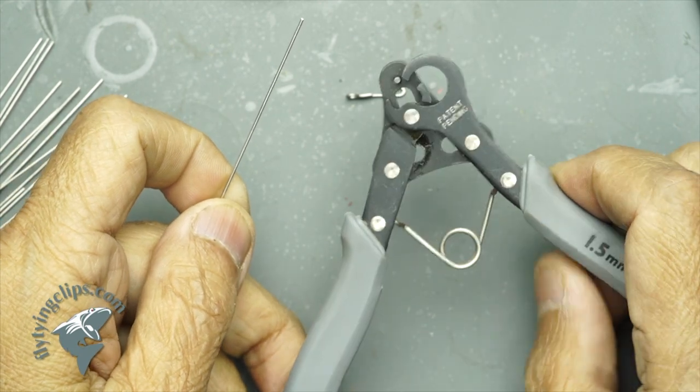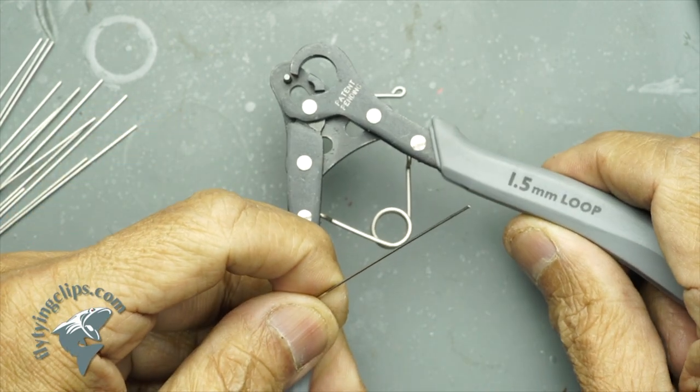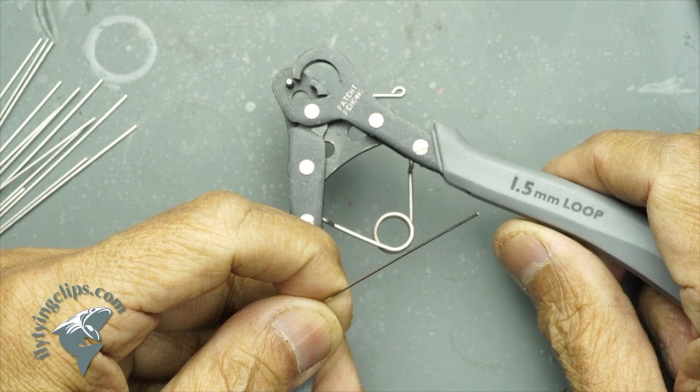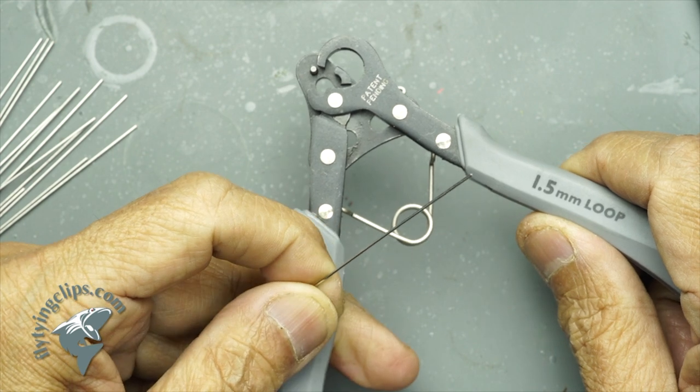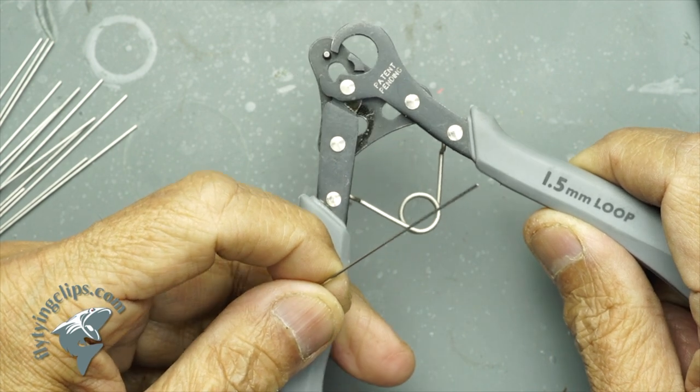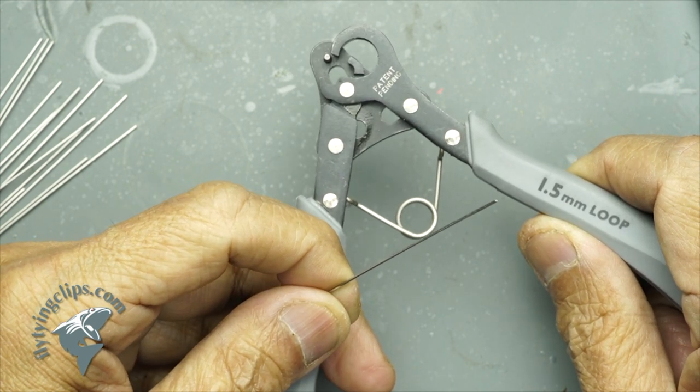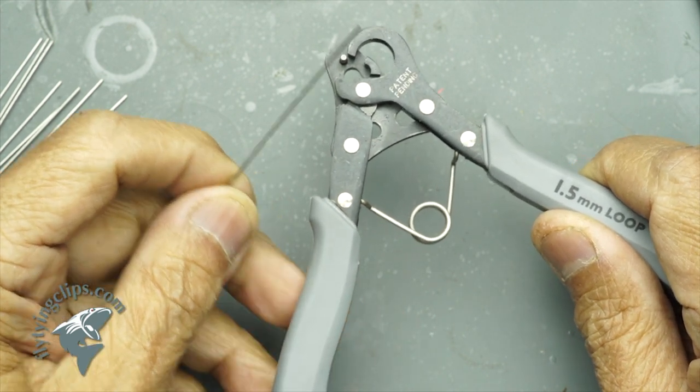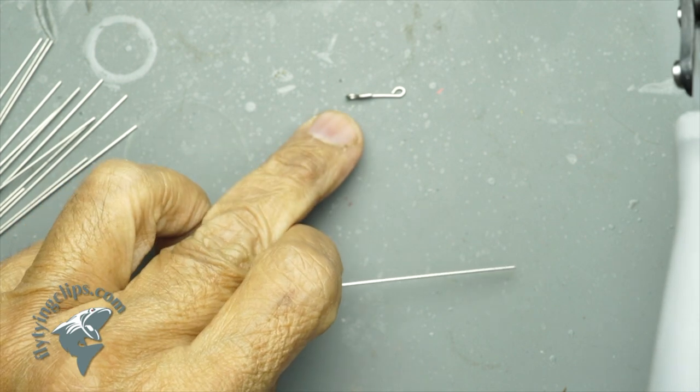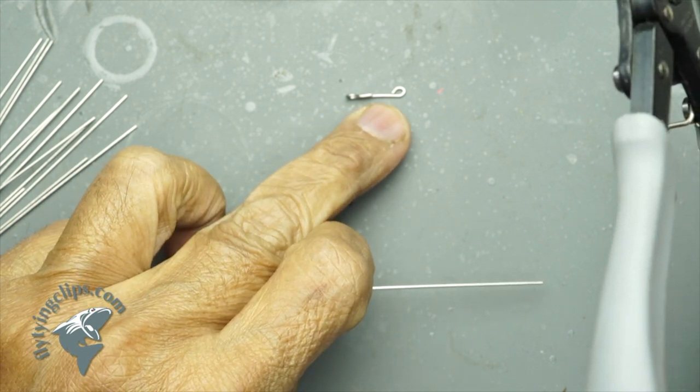This tool is called a looper and you will find it on Amazon or Joann's or Michaels. We are going to create two different kinds of loops on this wire: a closed loop and an R loop.